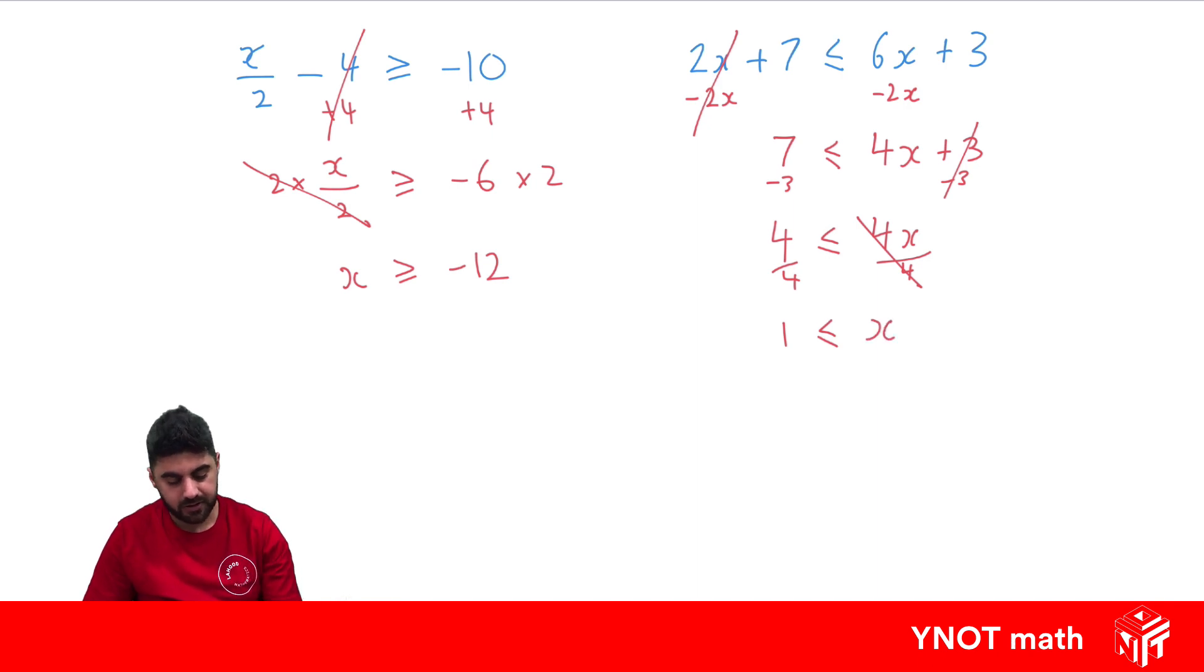Usually we like writing x on the left. And if we want to switch sides in an inequality, we can switch the sides around. So I can write x over here and 1 over here. But we have to flip the sign. Because when you read it forwards, it's 1 is less than or equal to x. And reading it backwards is x is greater than or equal to 1. So writing x here, we need to flip the sign.